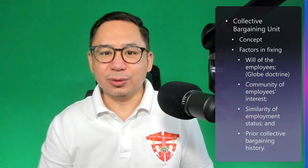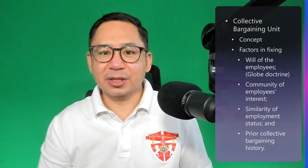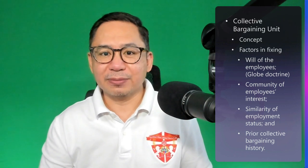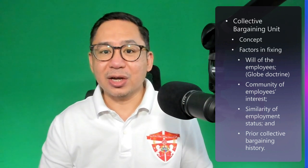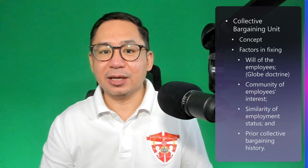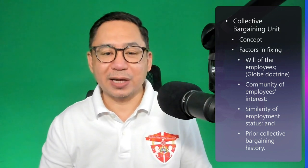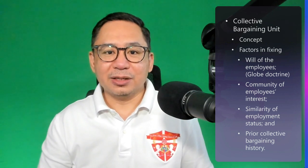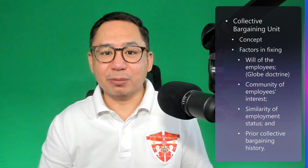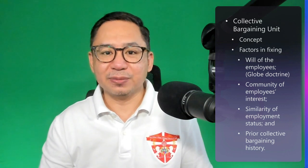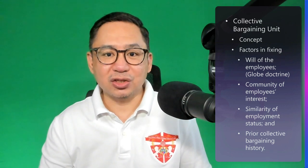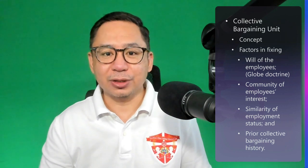The Similarity of Employment Status rule requires that non-regular employees be grouped as one category and regular employees as another. Prior collective bargaining history is also a factor but not a decisive one — it may be disregarded where circumstances have changed and can no longer be considered a reliable guide in determining the present bargaining unit.